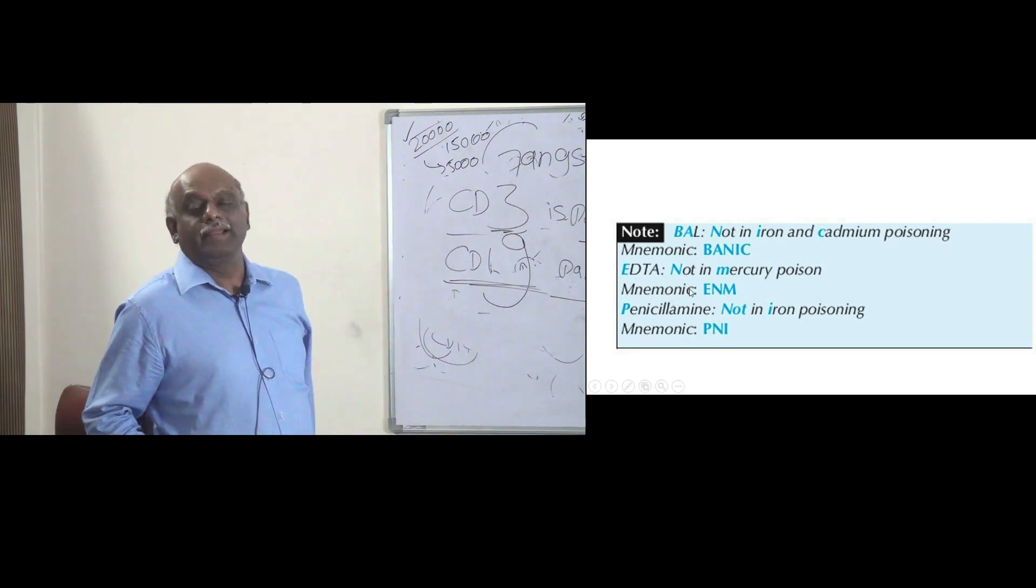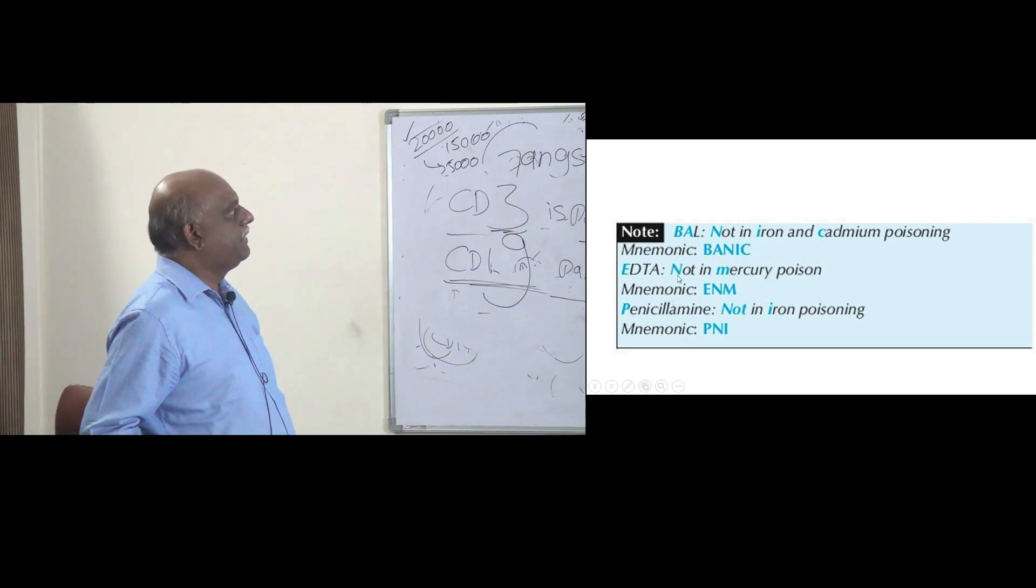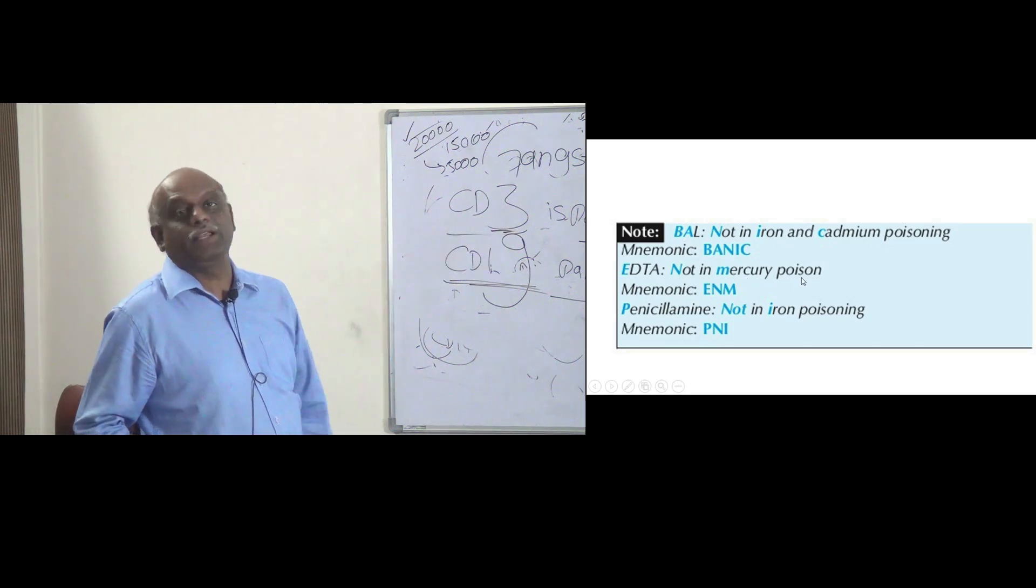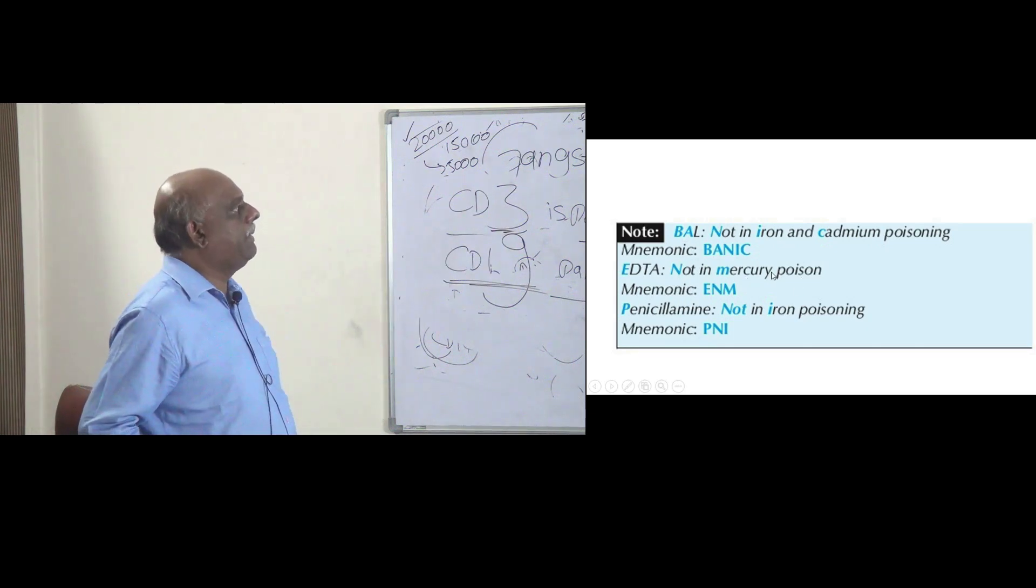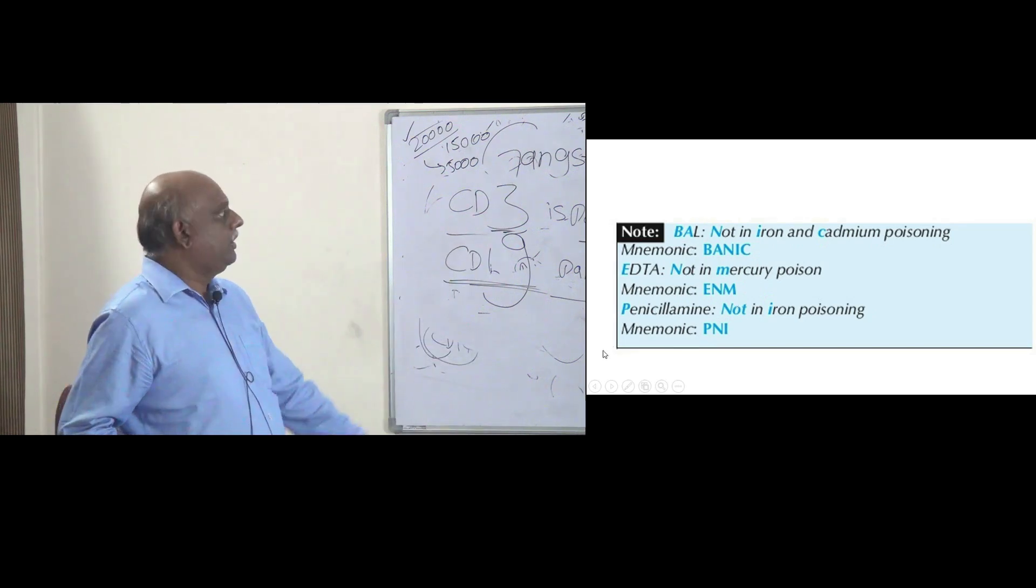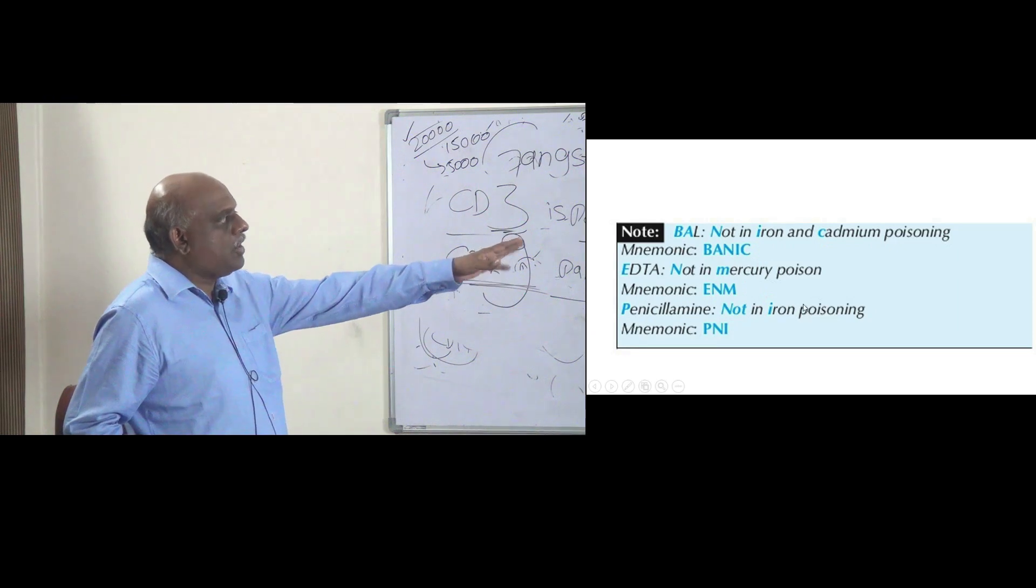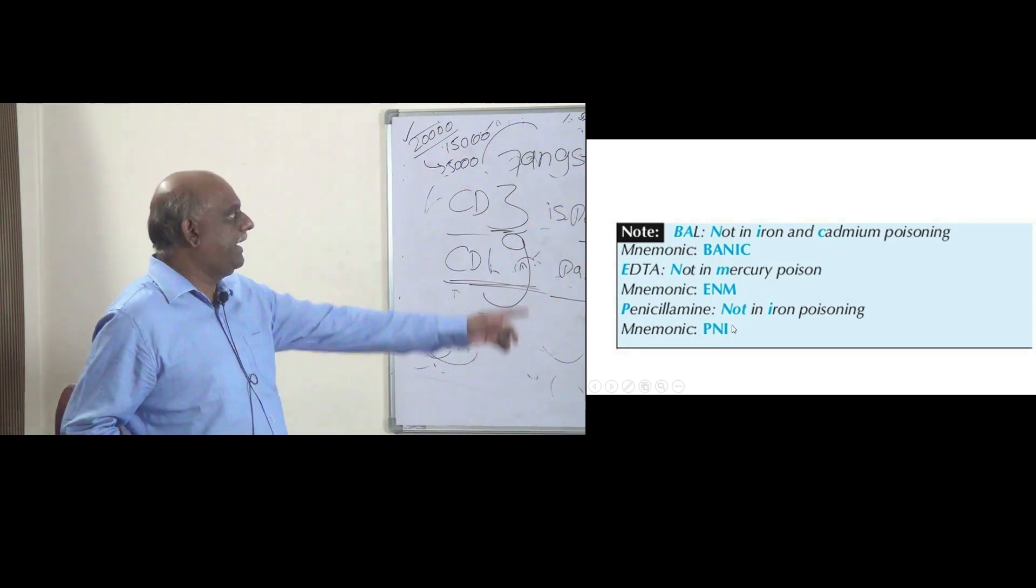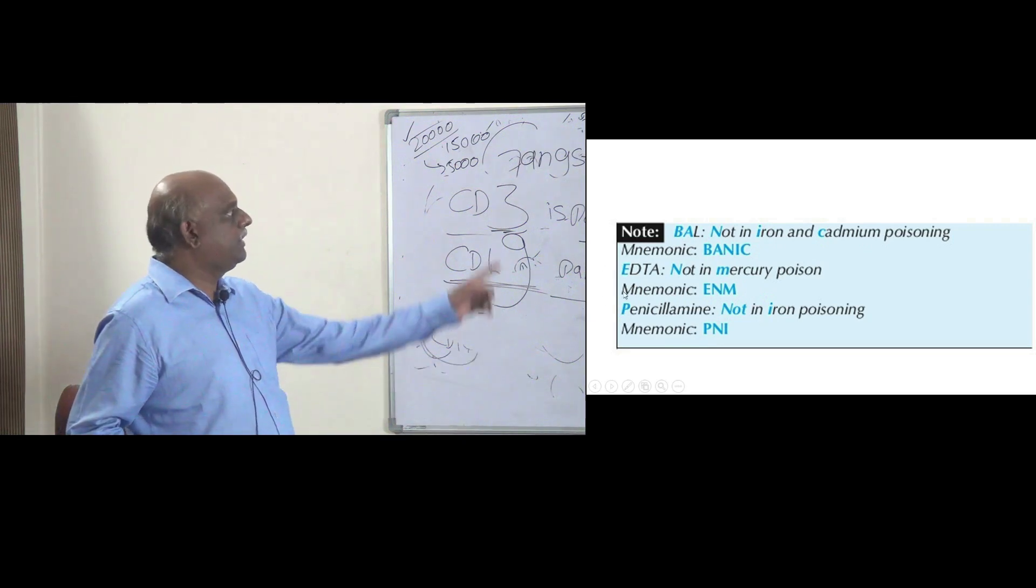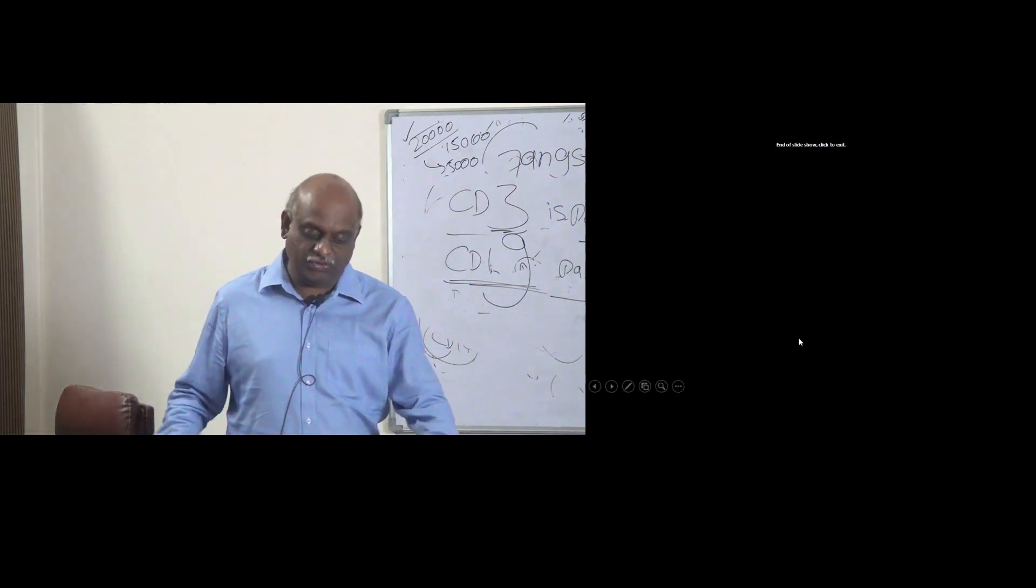Then EDTA - where you don't use it? We don't use it in mercury poisoning is what you have to remember. Then penicillamine - penicillamine is not used in iron poisoning. So these are the common questions which are asked.